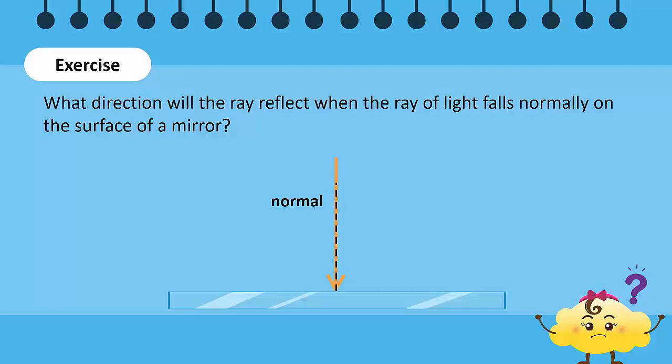When a ray of light falls normally onto the surface of the mirror, it makes a zero degree angle with the normal. According to the law of reflection, the angle of reflection is also zero degrees. Hence, the reflected ray moves back along the normal.